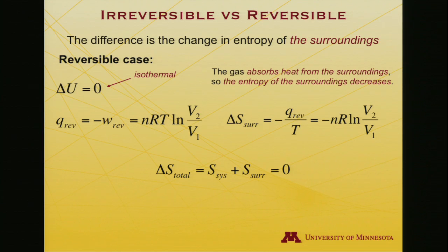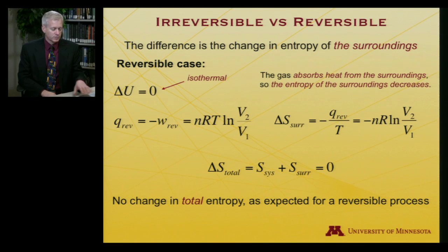This is reversible. It must be equal and opposite. So I get minus nR log V2 over V1. So the total change in entropy of the system plus the surroundings, zero, which it must be. It was a reversible process. No change in entropy. No change in total entropy, always expected for a reversible process.